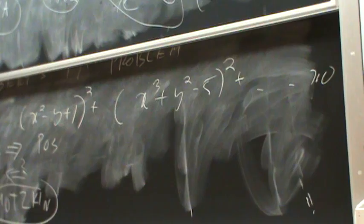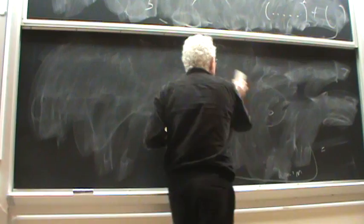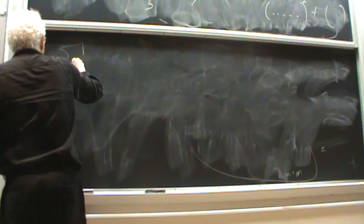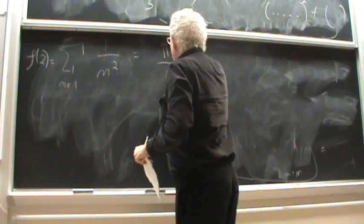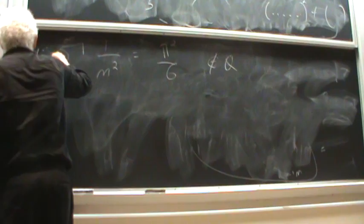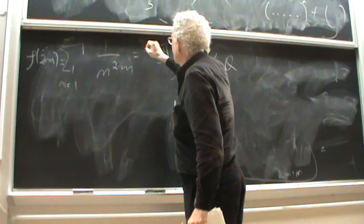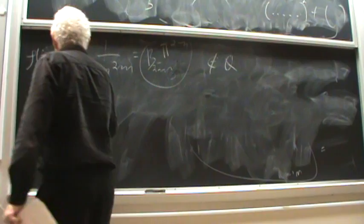Also, big open problems about irrationality are the values of the zeta function that I already mentioned at integer arguments. The so-called zeta of 2 has a nice formula in terms of pi squared. Goes back to Euler. And since pi is transcendental, we know that this is not a rational number. And similarly, zeta of 2m is also times some Bernoulli numbers. But what about zeta of 3?